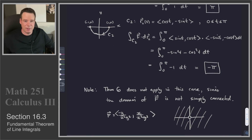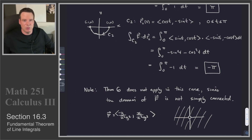So that's a surprising example: we've got partial derivatives that behave as we'd want for a conservative vector field, but this vector field is not conservative — and it has to do with the domain not being simply connected. That's it for this example and this section. Thanks for watching, and we'll see you again next time.